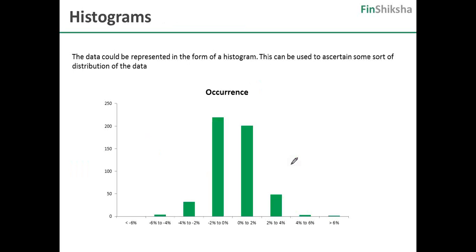These occurrences can be plotted on a histogram. Once you plot this on a histogram, it gives you a curve which is similar to this.